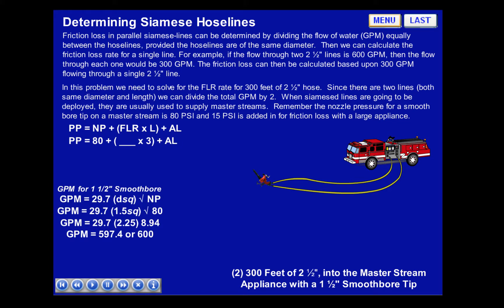In order to determine the friction loss rate for the 2.5-inch supply hose line, we must know the GPM for the 1.5-inch smoothbore tip. To determine this, we use the formula: GPM equals 29.7 times diameter squared times the square root of the nozzle pressure. In this case, GPM equals 29.7 times 1.5 squared times the square root of 80, or 29.7 times 2.25 times 8.94, which equals 597.4, rounded to 600 GPM.